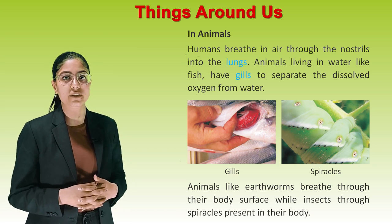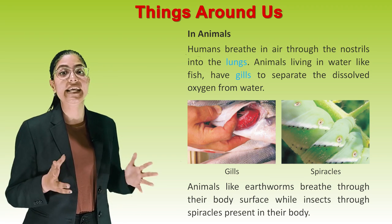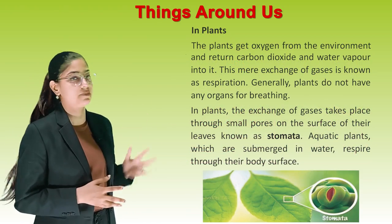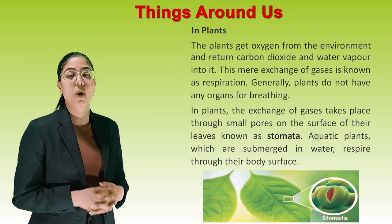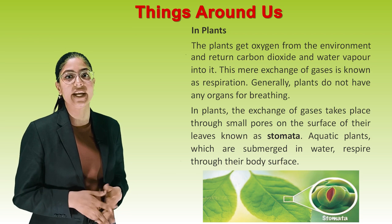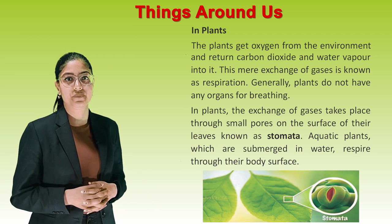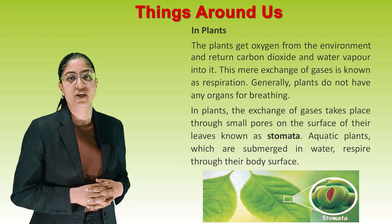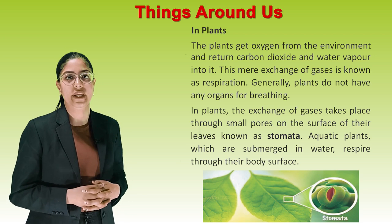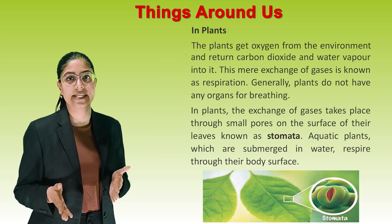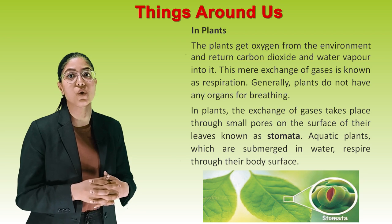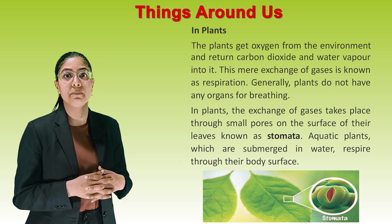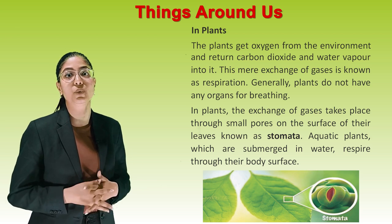Animals like the earthworm breathe through their body surface, while insects breathe through spiracles present in their body. In plants, oxygen is obtained from the environment and carbon dioxide and water vapour are returned to it — this exchange of gases is known as respiration. Generally, plants do not have any organ for breathing. The exchange of gases takes place through small pores on the surface of their leaves known as stomata. Aquatic plants submerged in water respire through their body surface.